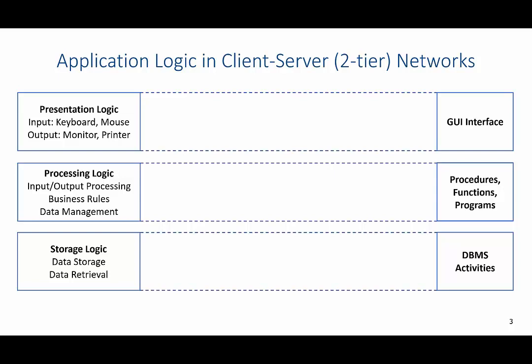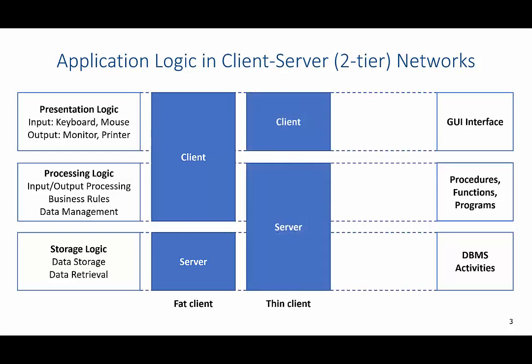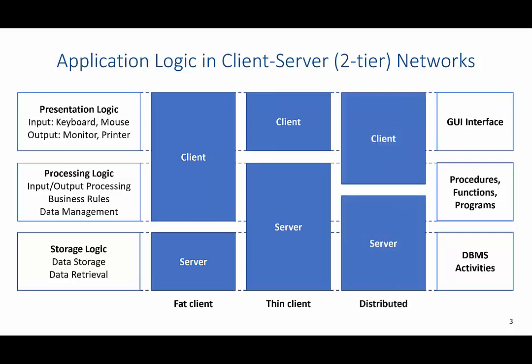There are three types of client-server networks. The first is the fat client, where the client handles most of the processing logic and the server is focused primarily on storage logic. There's the thin client, where the server handles all the processing logic. And then there's a distributed or hybrid approach, where both the client and the server share in the processing logic.